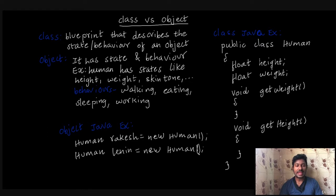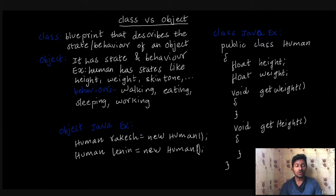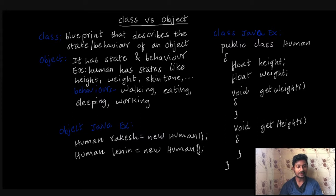What is the class vs object in Java? What is an object-oriented programming language? Examples include C++ and Java.